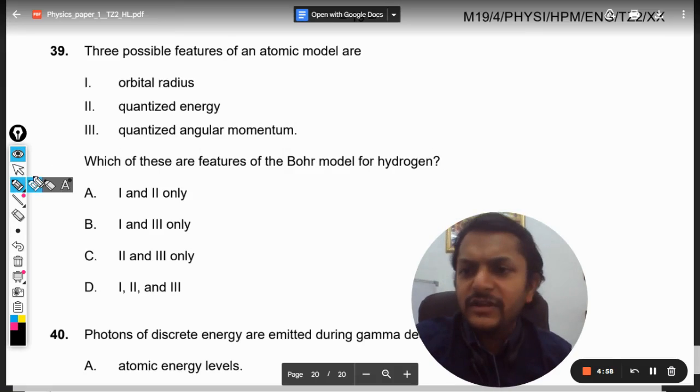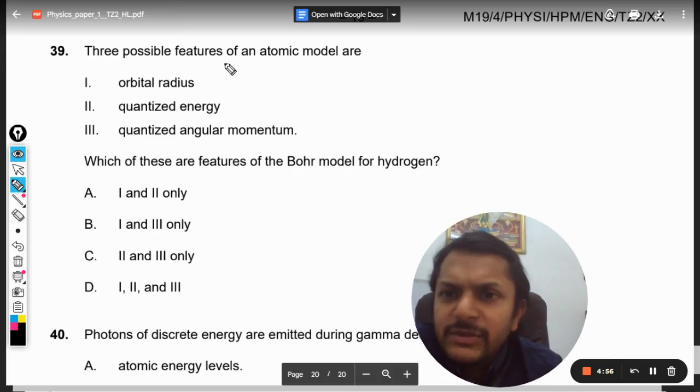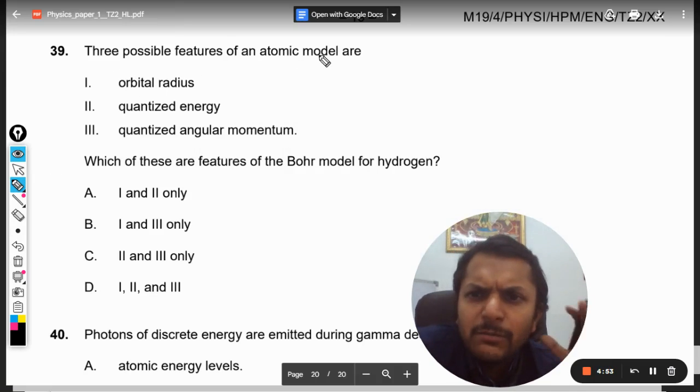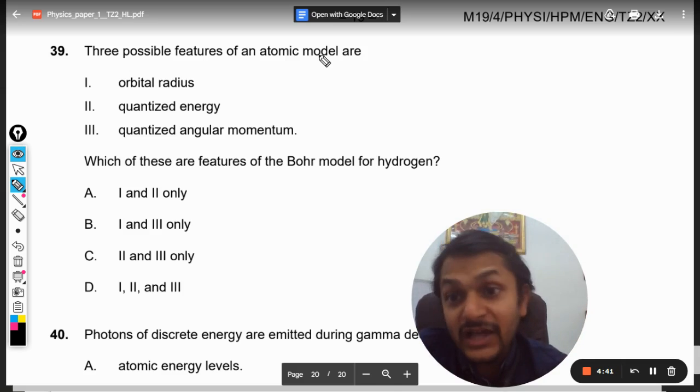Okay, so what is there in this question? Three possible features of an atomic model are: orbital radius, quantized energy, quantized angular momentum. Which of these are the features of Bohr model of hydrogen? I think all of these three, so I think the answer should be D.